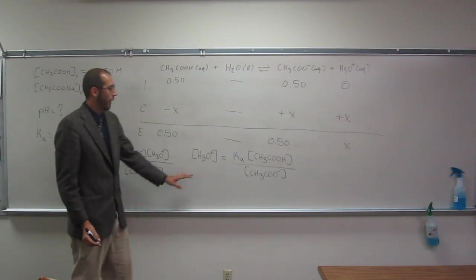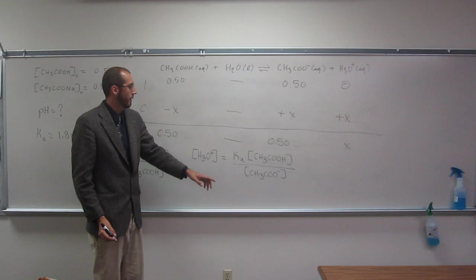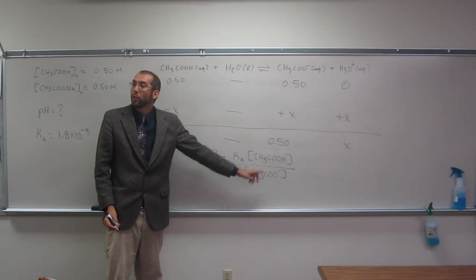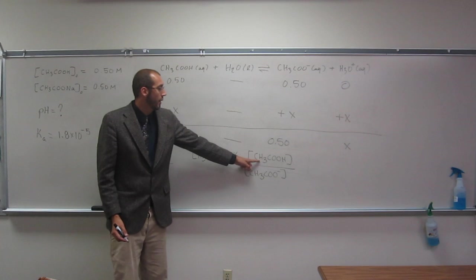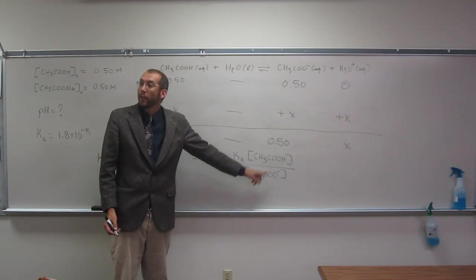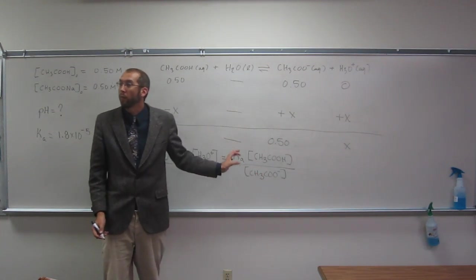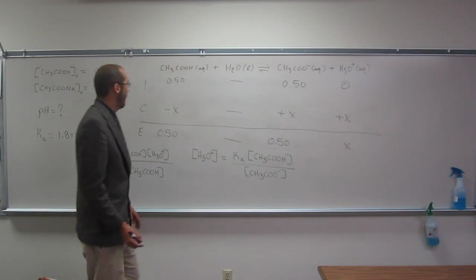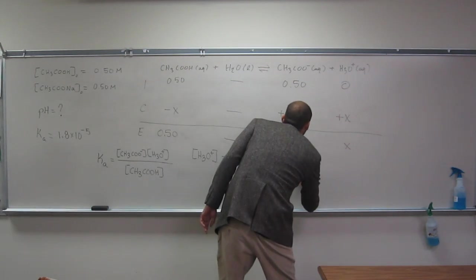So now we can just plug in, right? This would be X. Ka we've got, and we've got this and this. So remember, this and this are the same concentration, right? Our buffer capacity is the best. So let's just plug these values in.